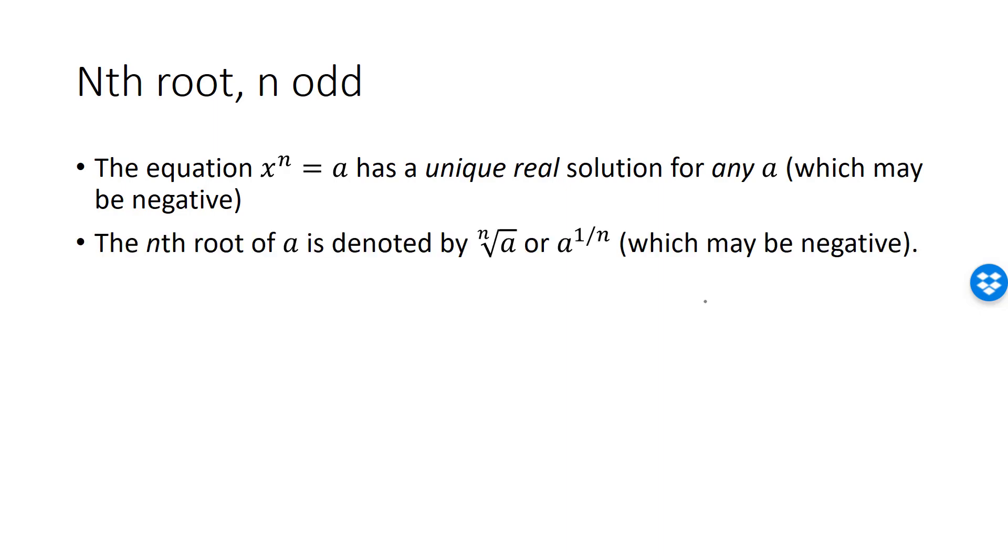We use the same notation for the nth root no matter if n is even or odd. If n is odd, then the nth root of a exists for all real numbers and the nth root has the same sign as a.